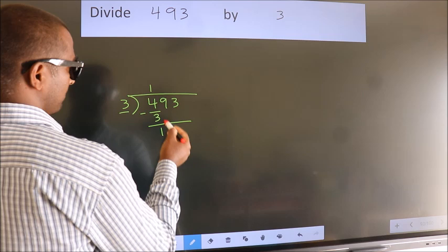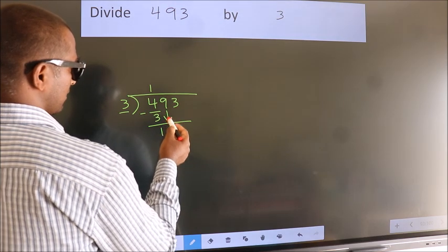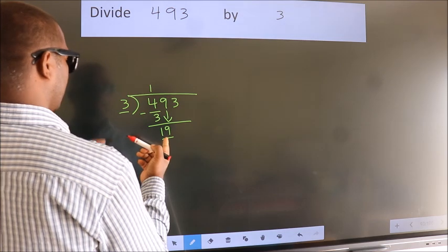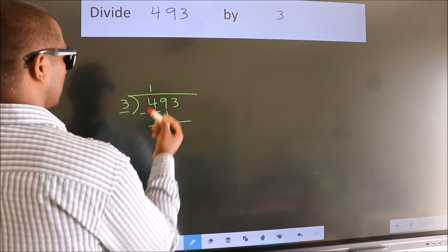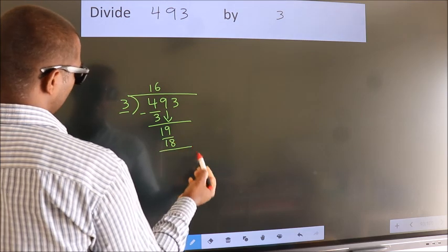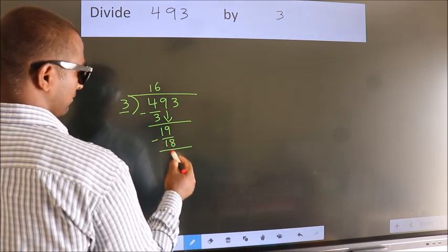After this, bring down the beside number. So 9 down, making 19. A number close to 19 in the 3 table is 3 6s 18. Now we subtract and get 1.